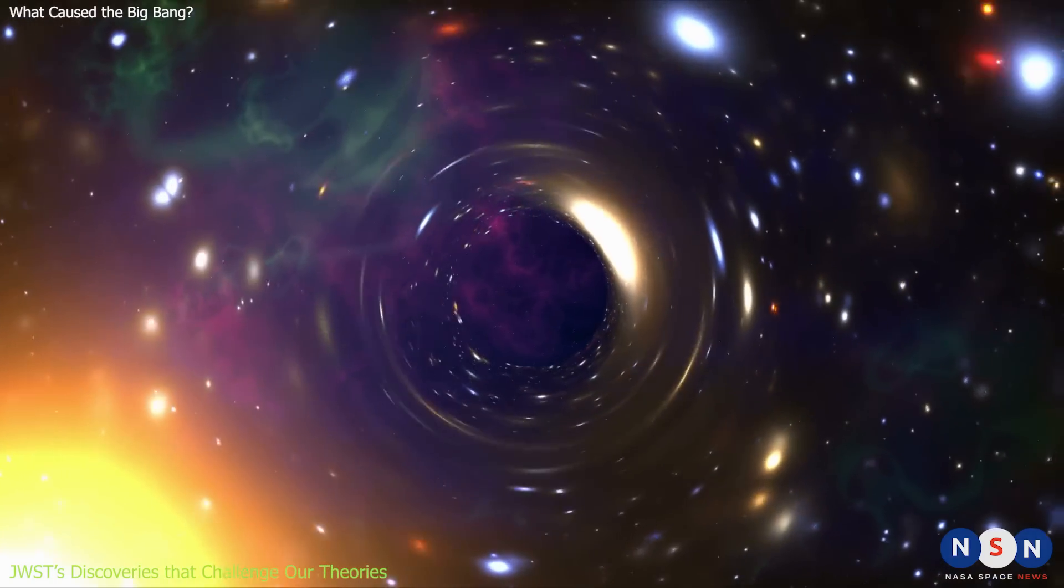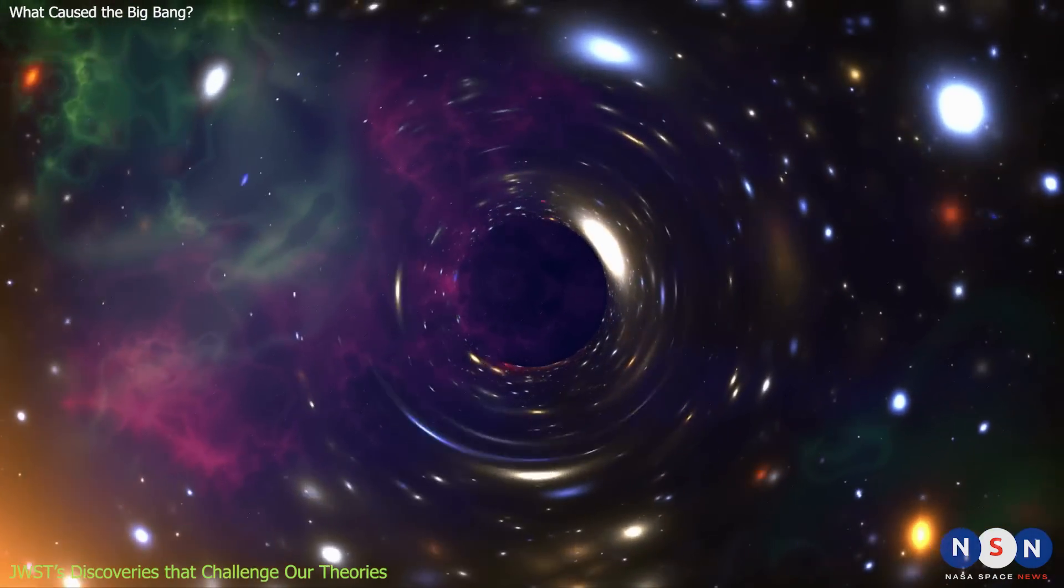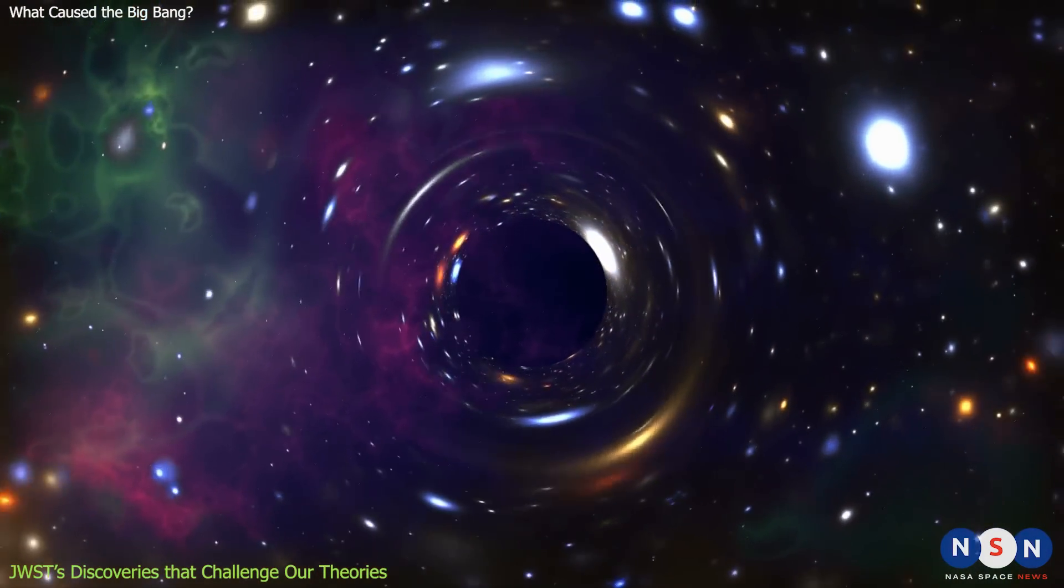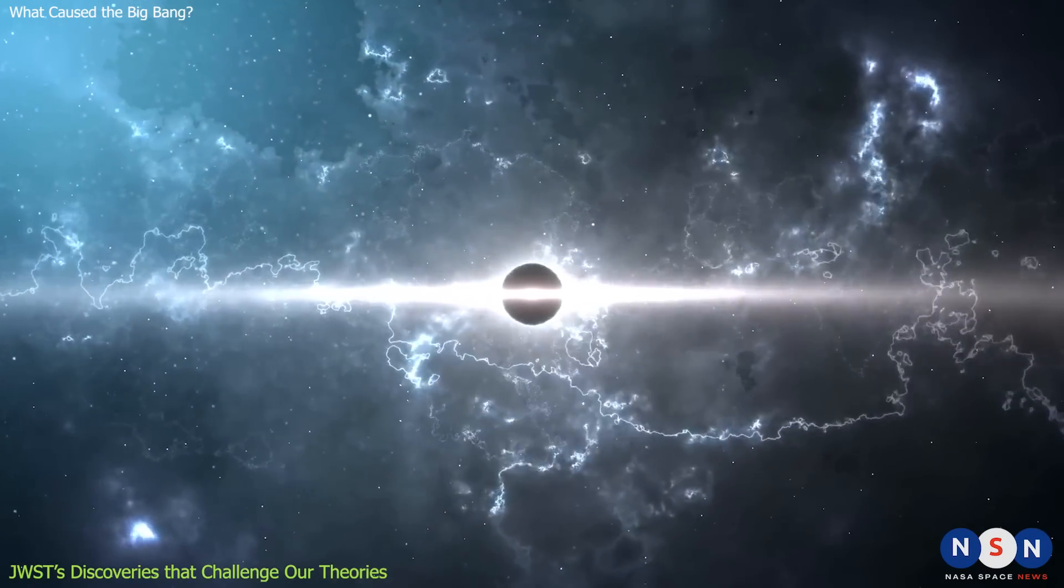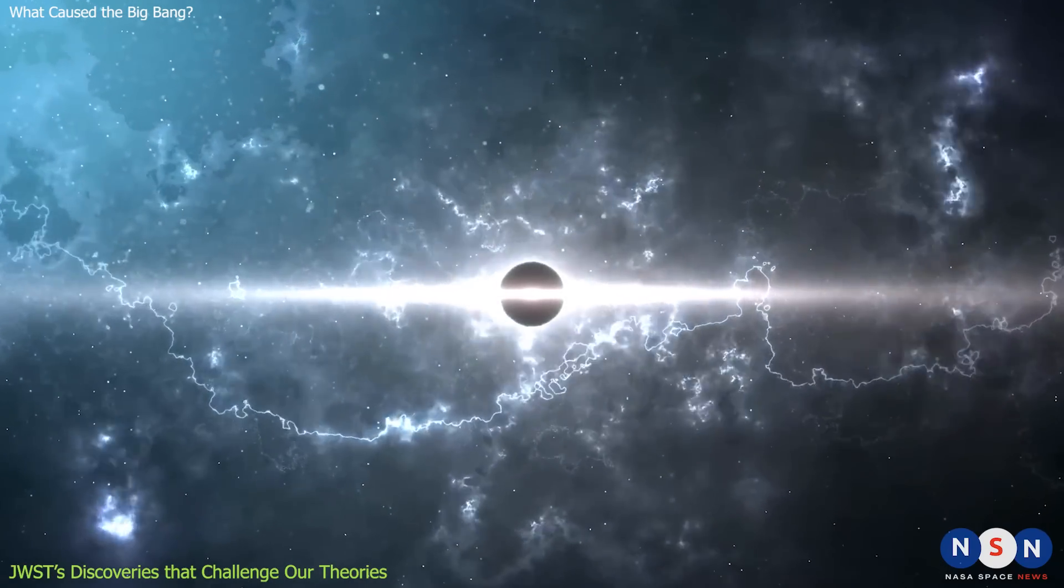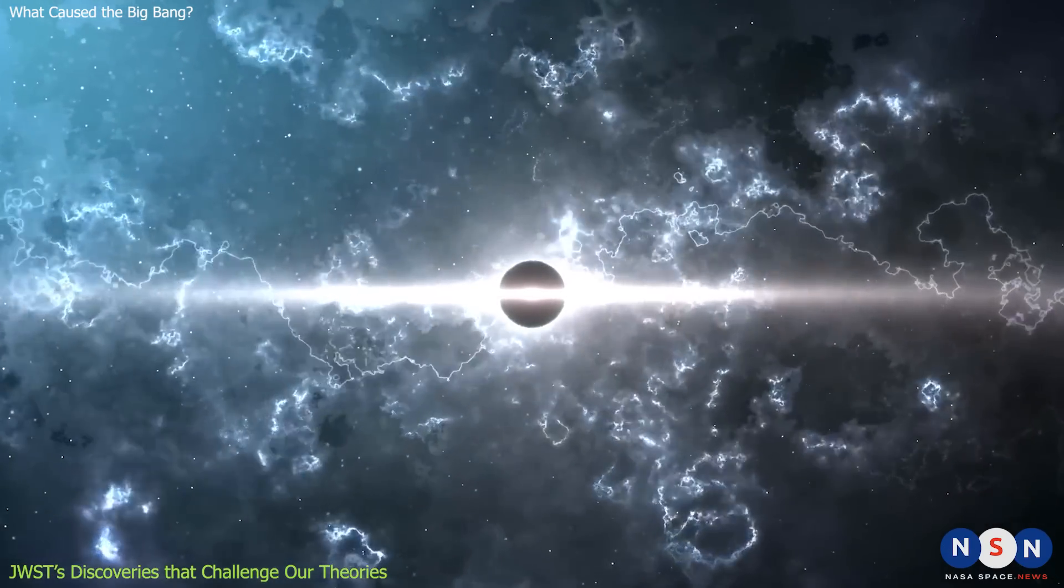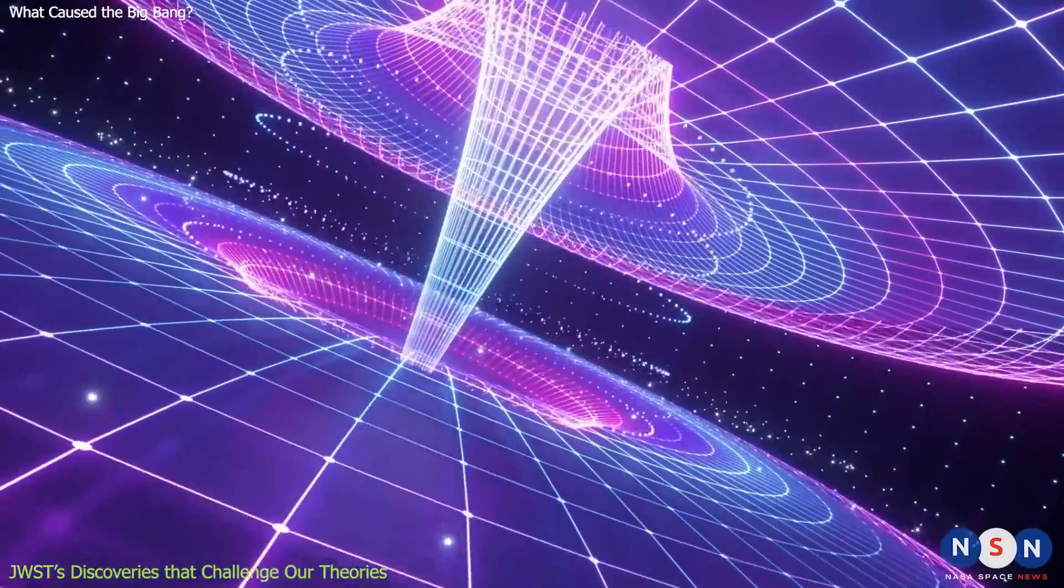Black holes grow by accreting matter and radiation from their surroundings, but there is a limit to how fast they can do that. The radiation they emit pushes back on the incoming matter, creating a balance that prevents them from growing too quickly. This limit is known as the Eddington Limit.